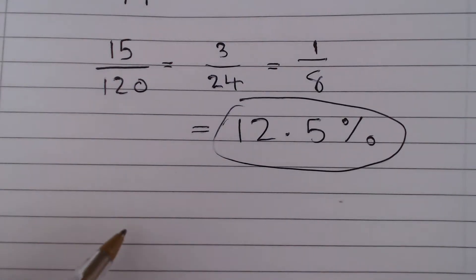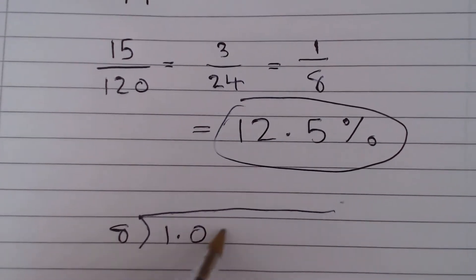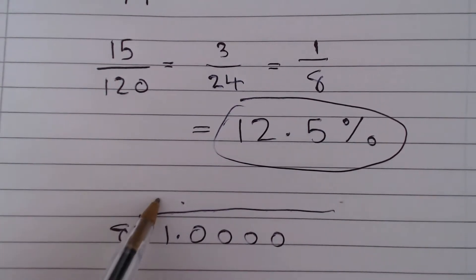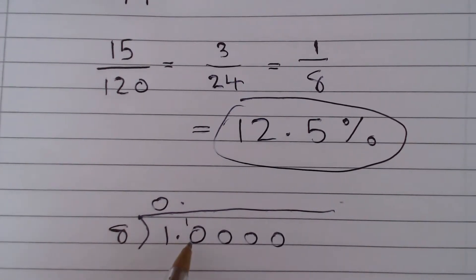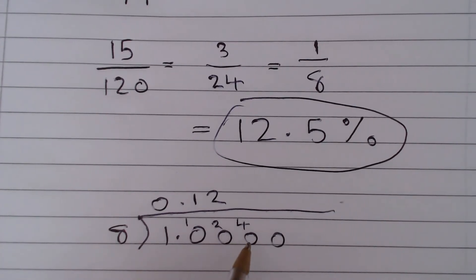Alternatively, we could set it up as a division as follows. So we could say, put in our decimal points, and say how many eighths go into 1? 0. How many eighths go into 10? 1 goes, remained a 2. How many eighths go into 20? We can get 2 eighths, 16, and then we remained a 4. And then how many eighths go into 40? 5 go exactly. So it's 0.125, which is 12.5%.